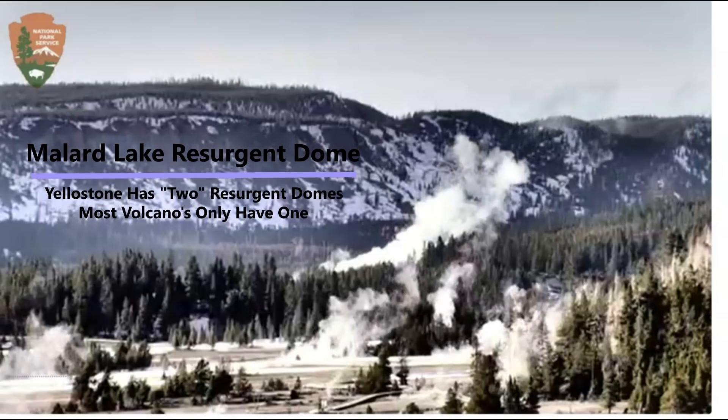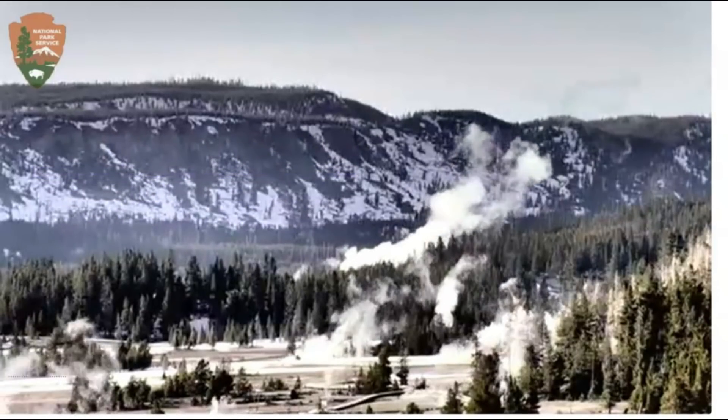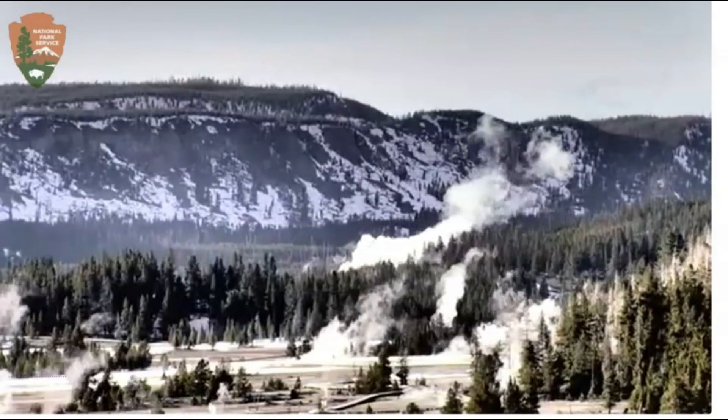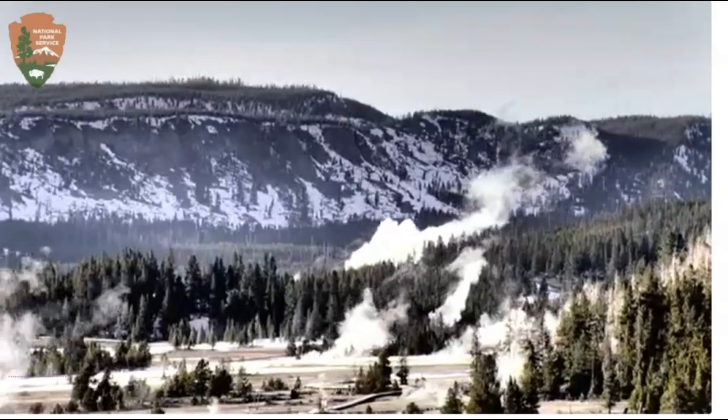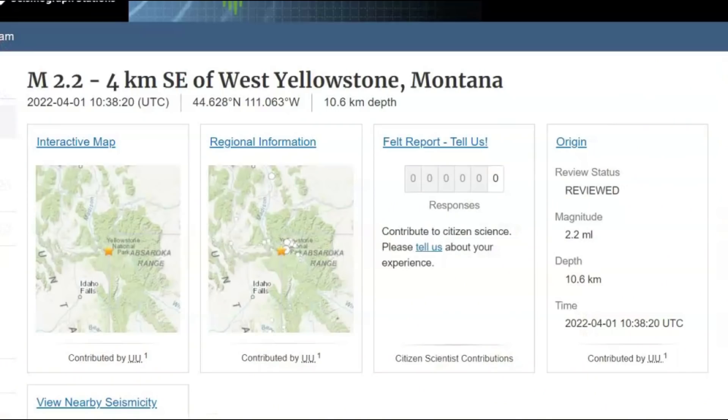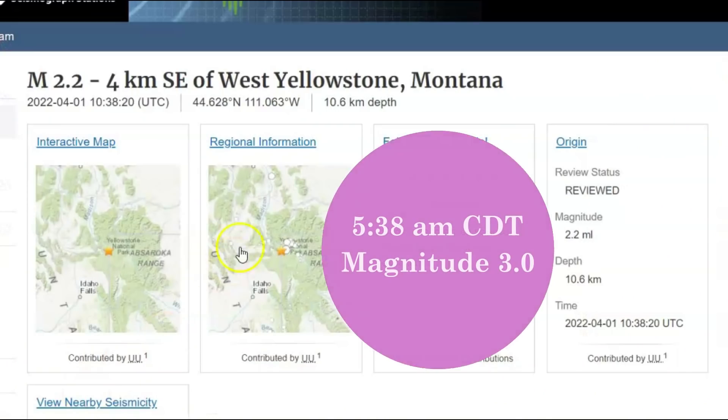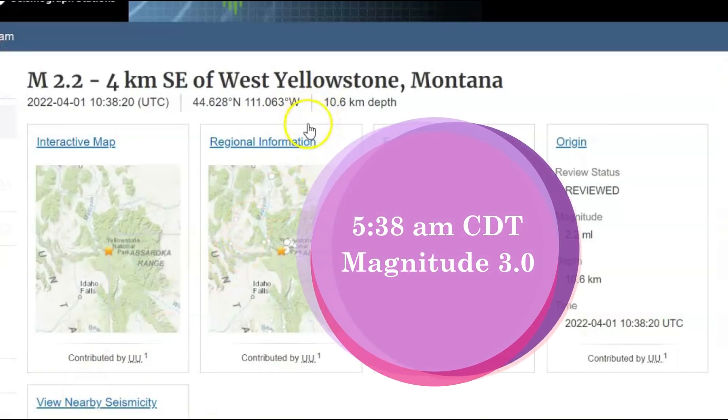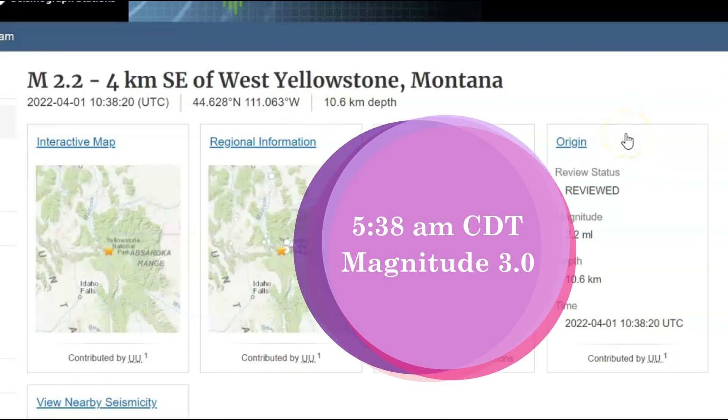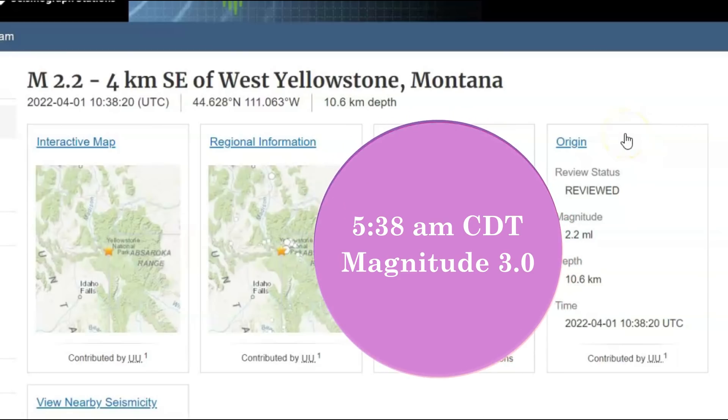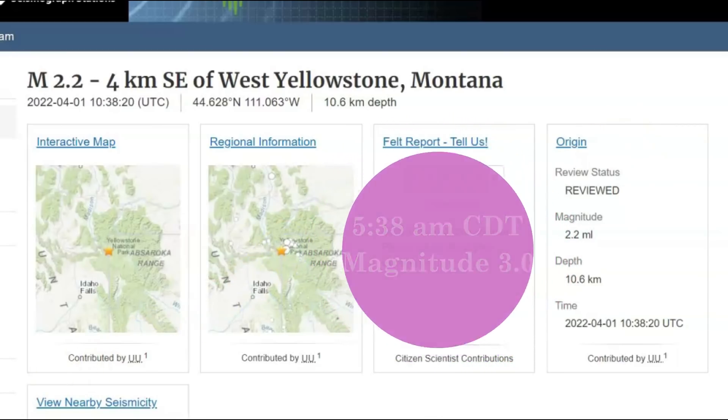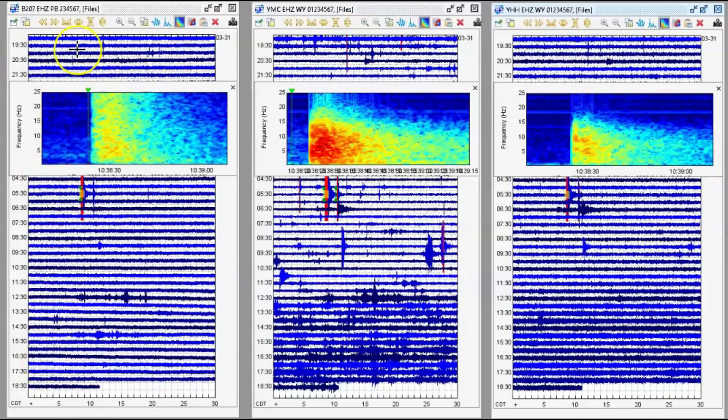Everyone there at the University of Utah probably went home early. The last earthquake they reported happening there at Yellowstone was at 5:38 AM Central Daylight Time. It was a magnitude 2.2, they said, but it was actually a magnitude 3.0.